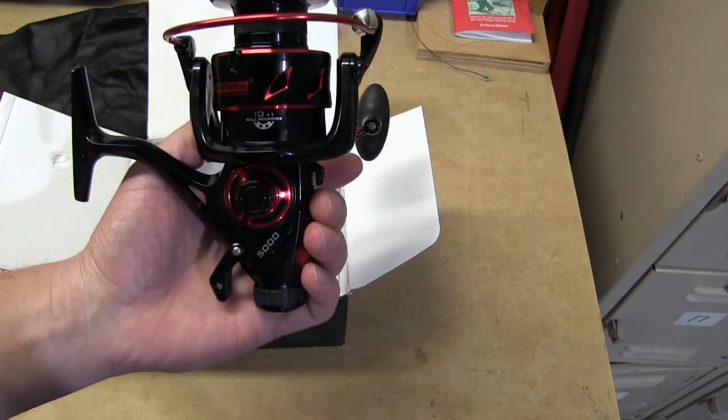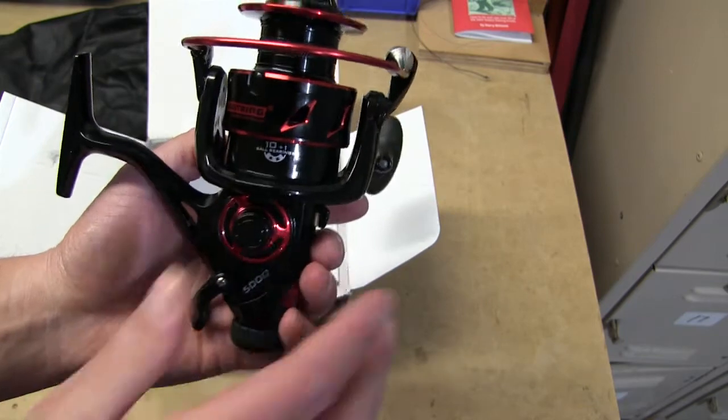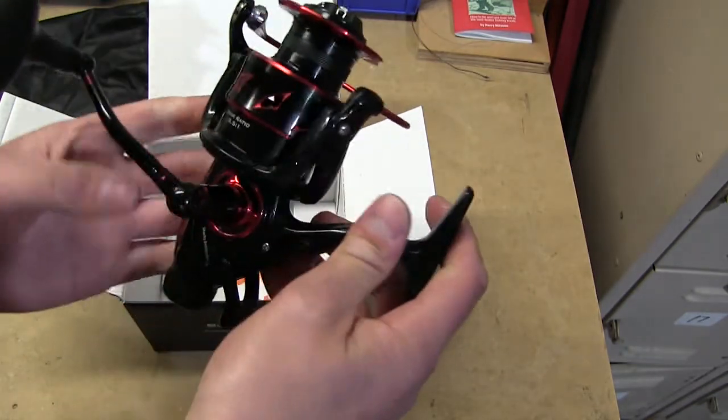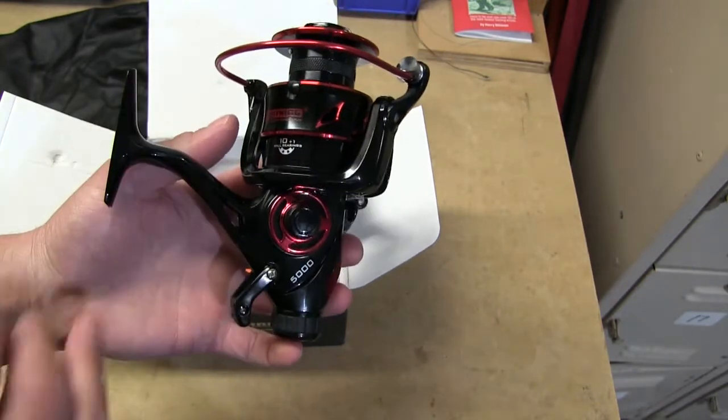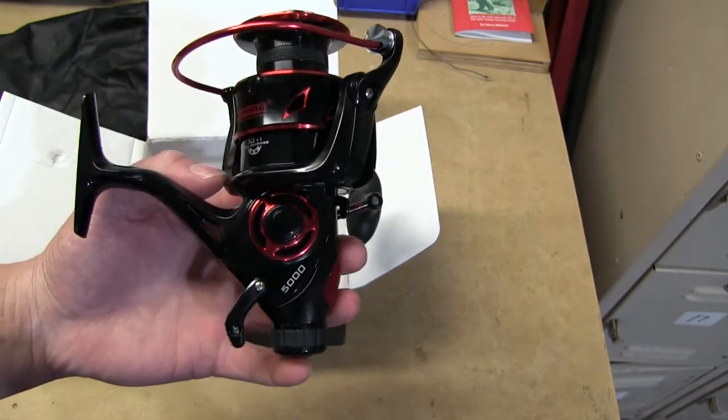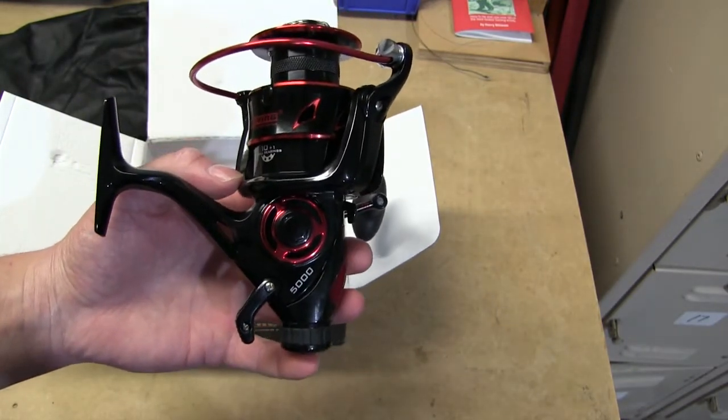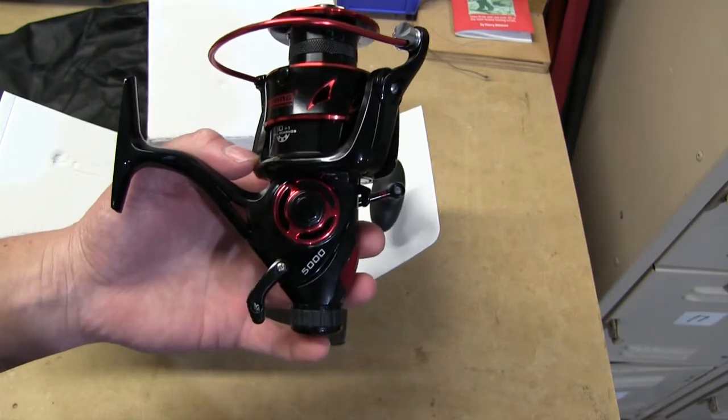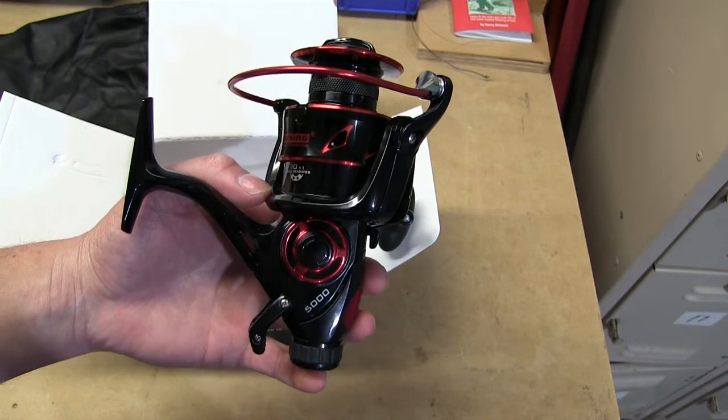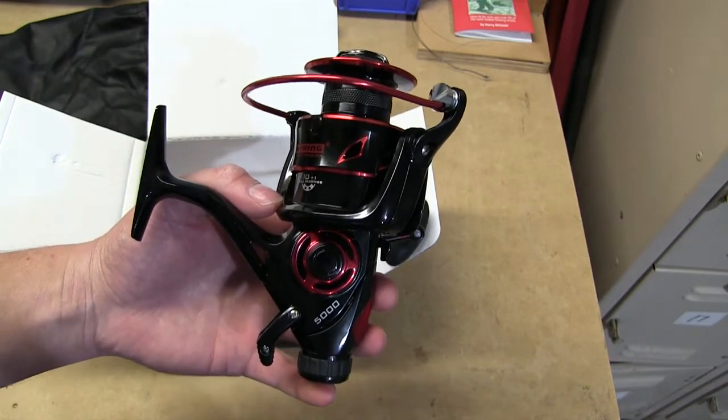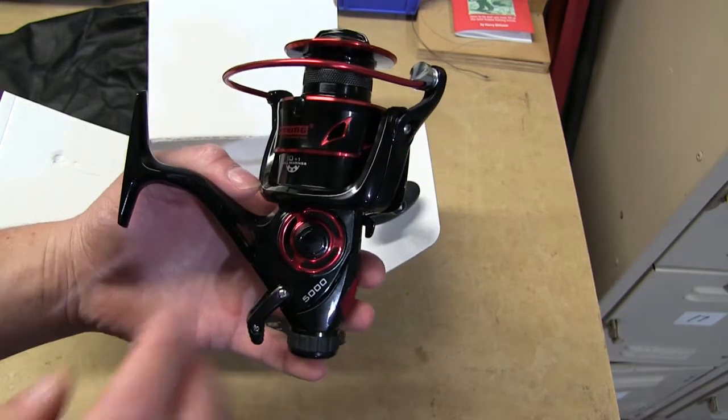And it does have 10+1 ball bearings—I don't know that I had said that before. So here it is, the Cast King Sharky Bait Feeder 3. I purchased this off Amazon. I'll have a link in the description where you can go to find it if you should want to purchase it. It's one of the few reels or fishing items that was in stock. I got this thing in a couple days with Prime shipping, so that's really nice.